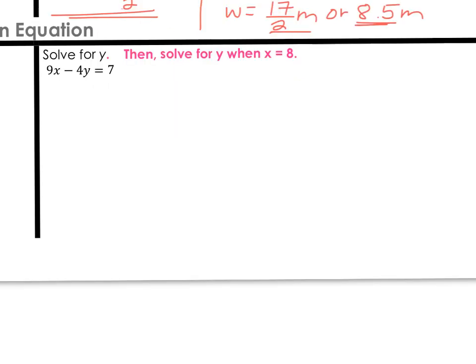Down at the bottom where it says rewrite an equation. You'll notice that I crossed off example B. It's no longer on my sheet. You're welcome to cross that off as well. We're not going to do that problem. However, I would like you to add on the directions that are written in pink. Solve for y, then solve for y when x equals 8. We're going to solve for y first and then plug 8 in second.